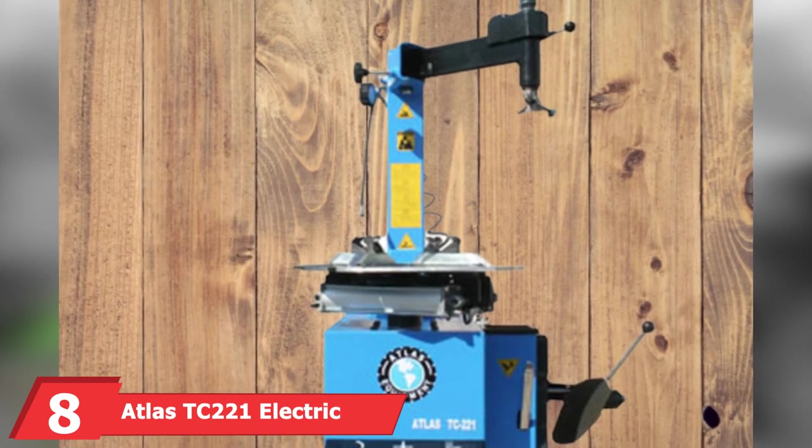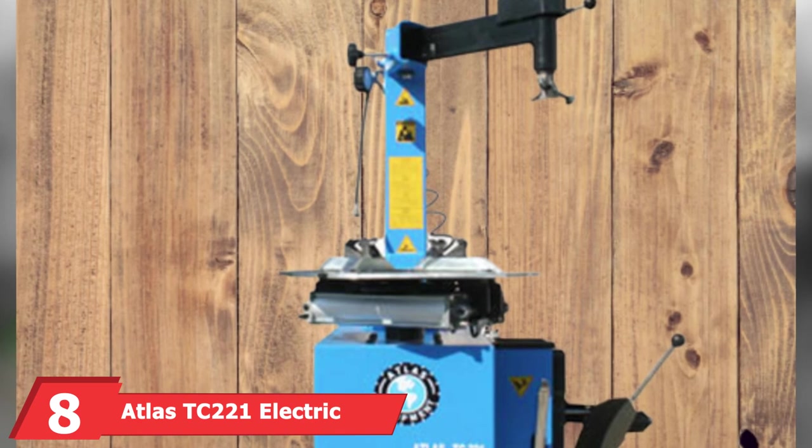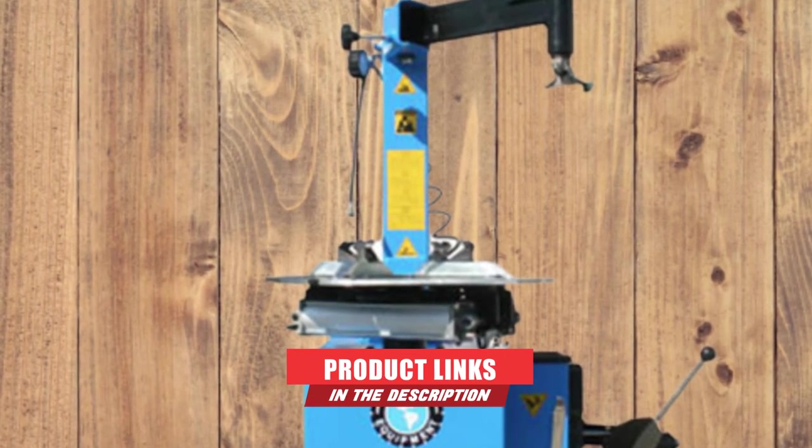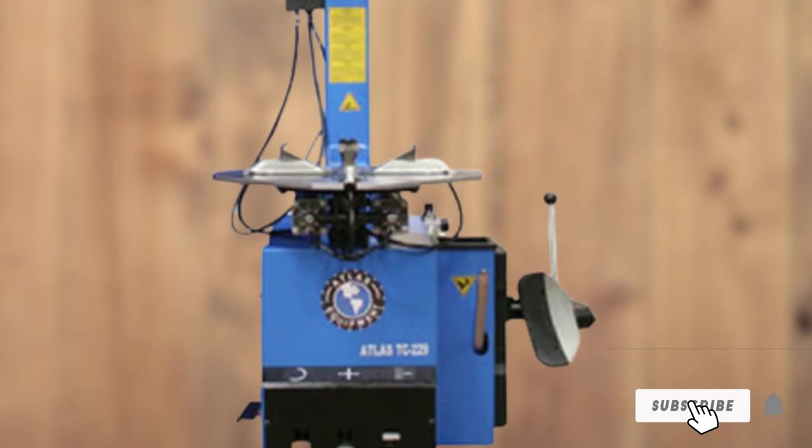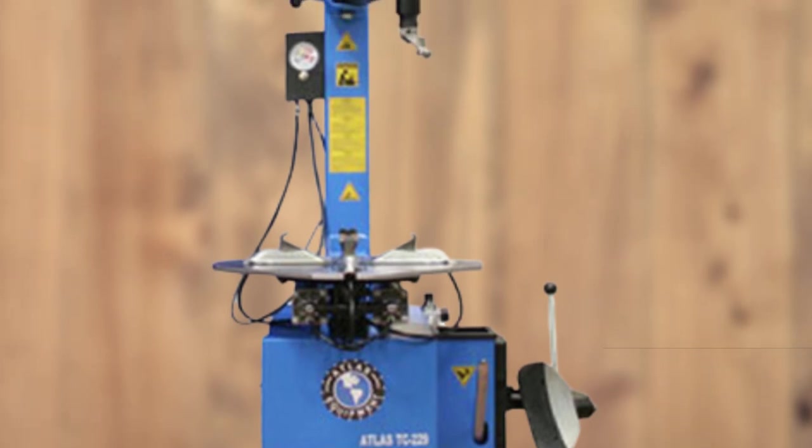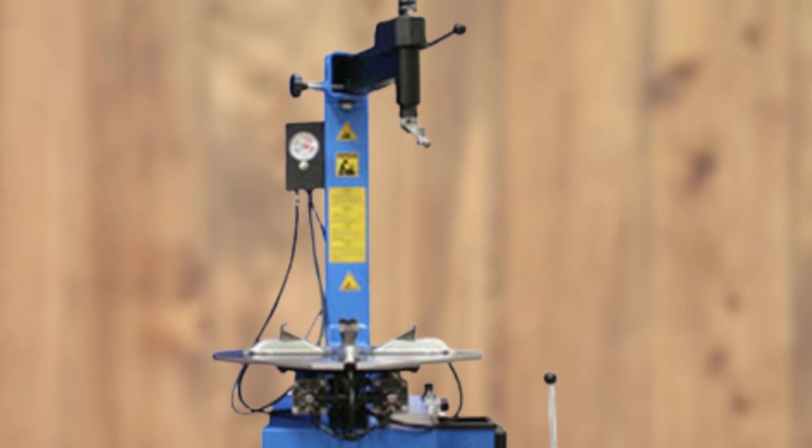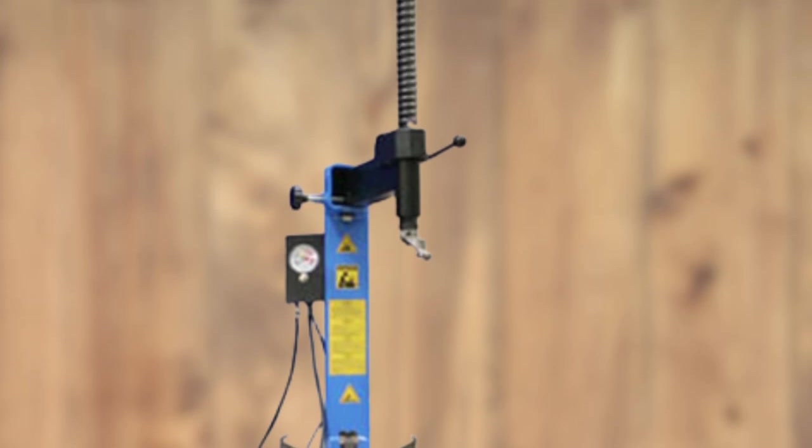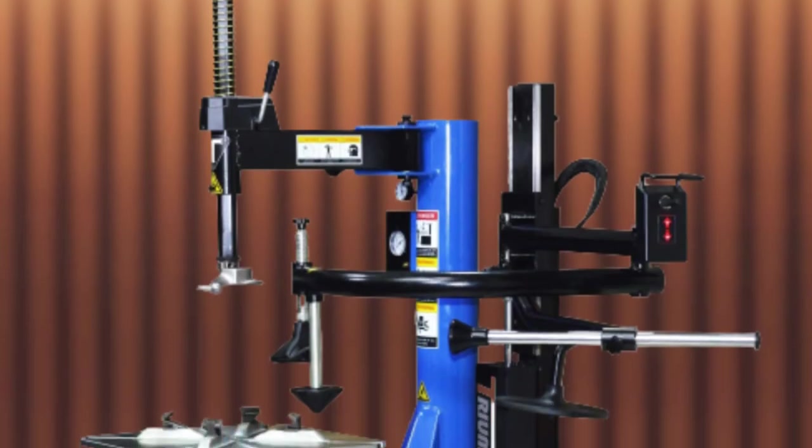The number 8 position is held by Atlas TC221 Electric Slash Pneumatic Wheel Clamp Tire Changer. If you need something seriously heavy-duty, then consider the Atlas TC221 Electric Slash Pneumatic Wheel Clamp Tire Changer. This isn't a funny little gadget for the casual tire changer. This is professional garage equipment and if you're only changing the odd tire here and there, this would be overkill. However, if you are a professional or semi-professional mechanic, then this is actually very reasonably priced.